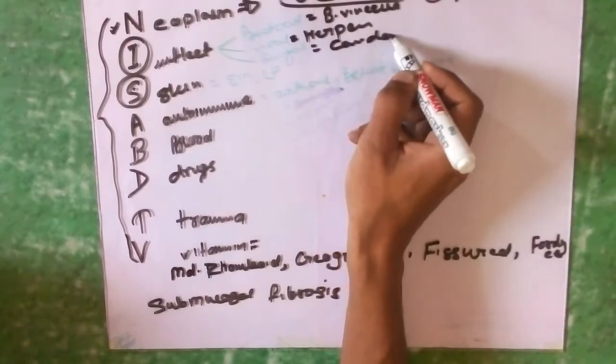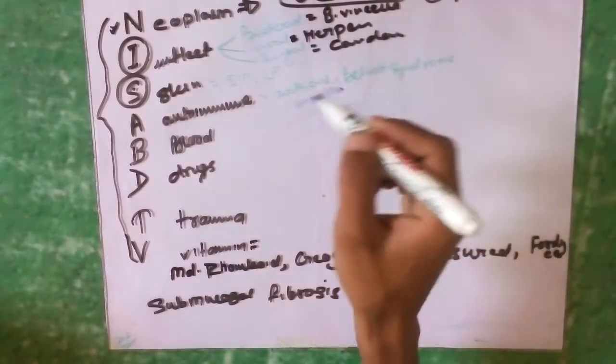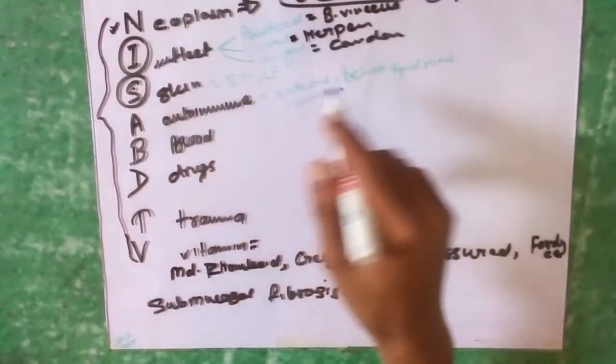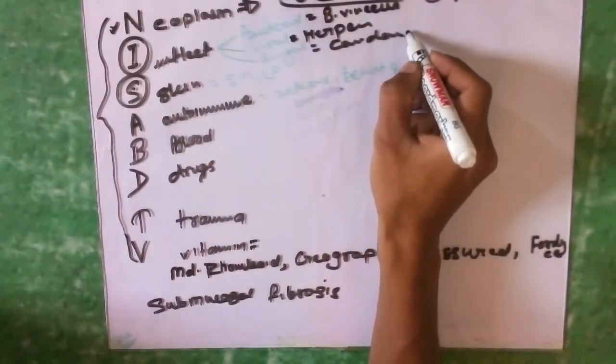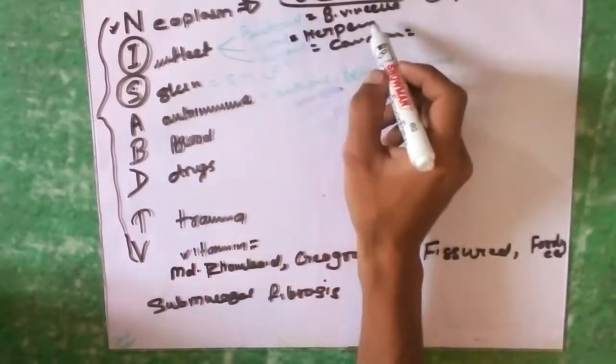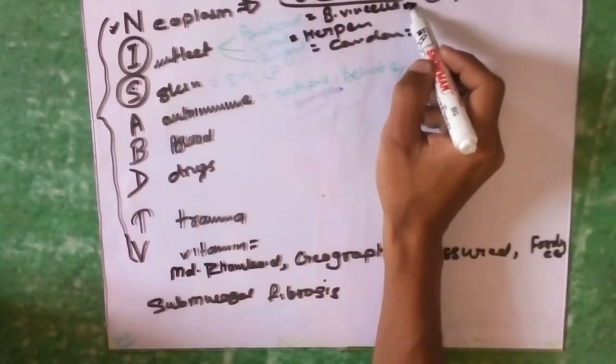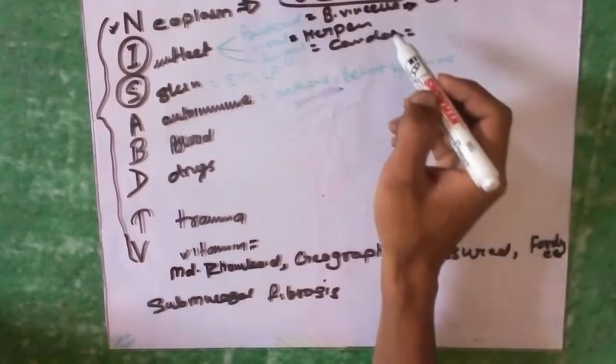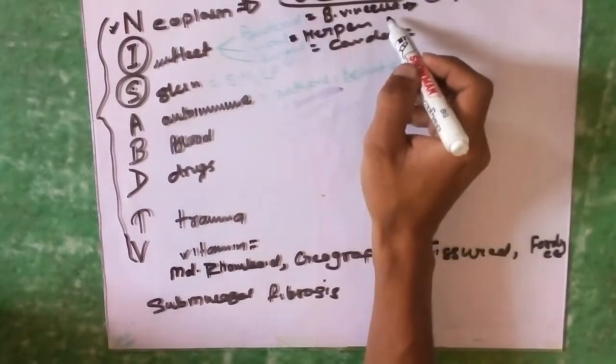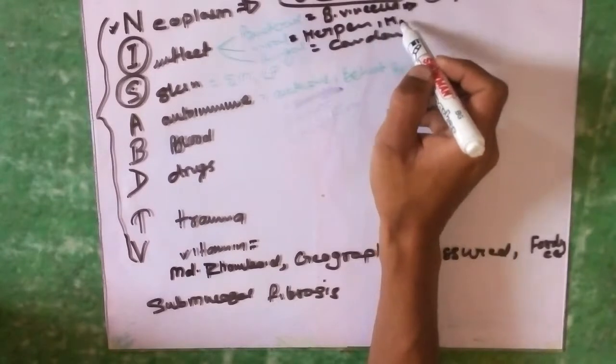Regarding treatment of bacterial infection, we have discussed that either penicillin, erythromycin, or metronidazole can be given. Herpes zoster or herpes virus can be treated with acyclovir, an antiviral drug.